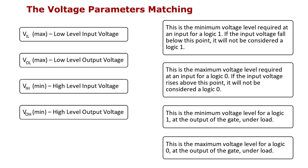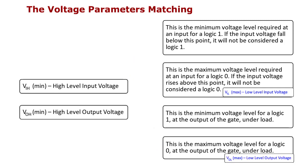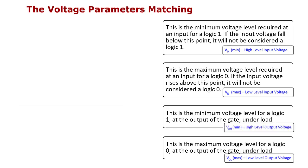Try to match the abbreviation on the left to the definition on the right. Pause the video if you need more time. High-level output current: this is the current that flows from the output.